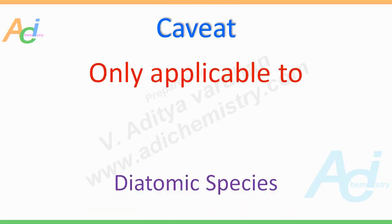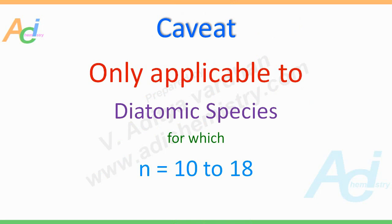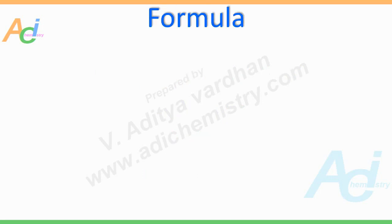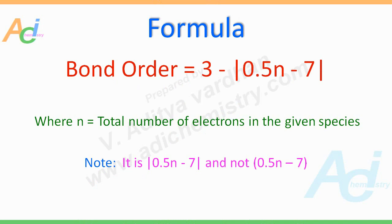But there is a caveat here: this formula is only applicable to diatomic species for which N is equal to 10 to 18. However, this is a very handy and useful trick for those attempting IIT JEE and NEET exams or any other high-level exams, where bond order is asked for species with N equal to 10 to 18. Once again, the formula — fix this in your mind. It is the modulus of 0.5N minus 7, and not simply 0.5N minus 7. You have to take the absolute value of the outcome of 0.5N minus 7.